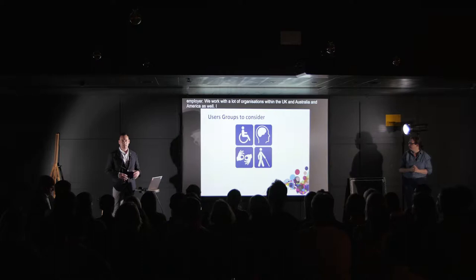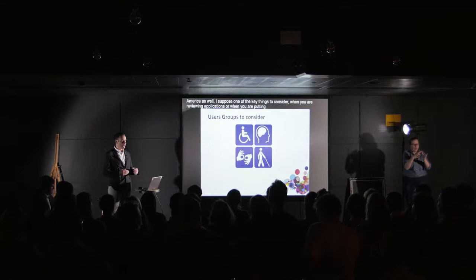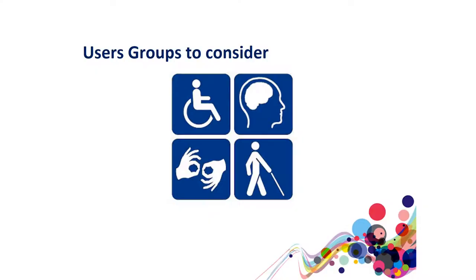One of the key things to consider when reviewing applications or putting together a strategy is to audit and include WCAG 2 references when reviewing an application's technical standard. Some of you may also involve users within the process. What I want to do now is take you through some of the individuals and applications you should consider when reviewing your application — key considerations for physically impaired users and cognitive impaired users, who use different assistive technologies.